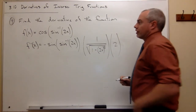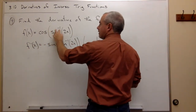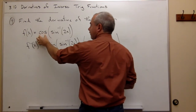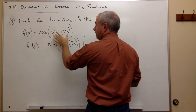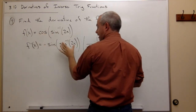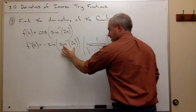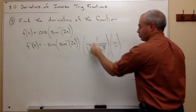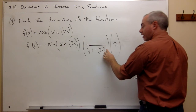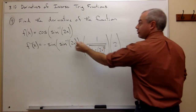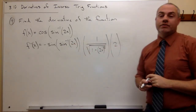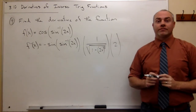So the derivative of cosine of sine inverse of 2x: the derivative of cosine gives minus sine of what's inside, and then we multiply by the derivative of what's inside, which is 1 over the square root of 1 minus (2x) squared, times 2. And we get our derivative.